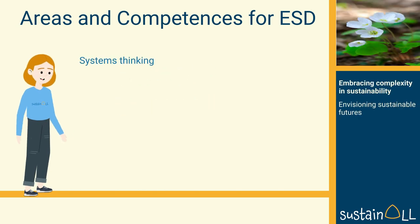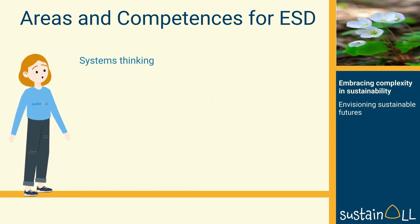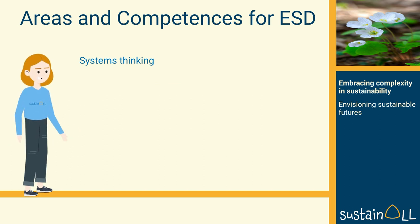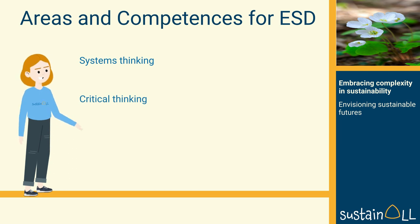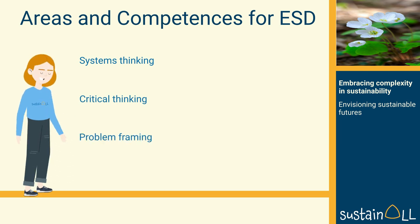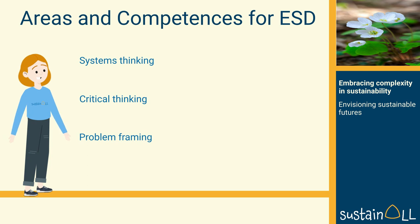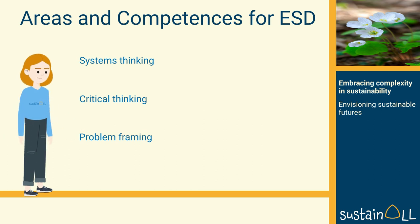Embracing complexity and sustainability requires students to approach a sustainability-related problem from all sides through systems thinking, assess information and arguments through critical thinking, and identify suitable solutions to anticipate, prevent, or even mitigate problems through problem framing.